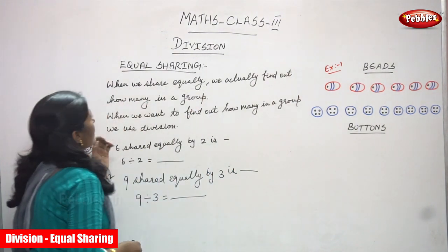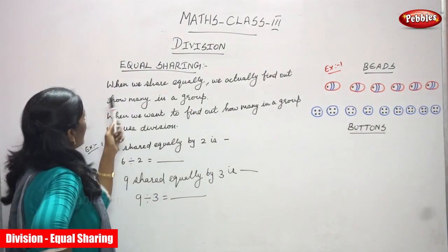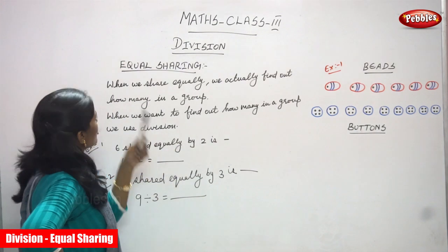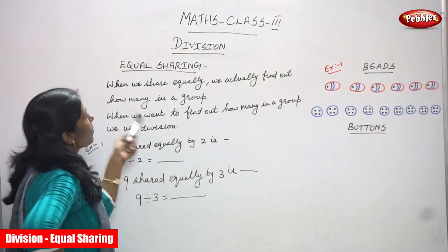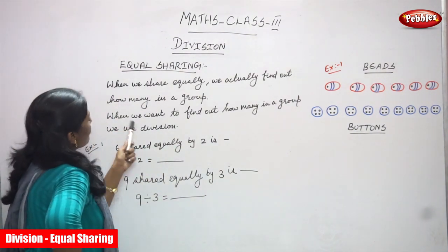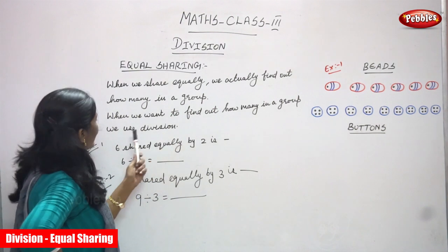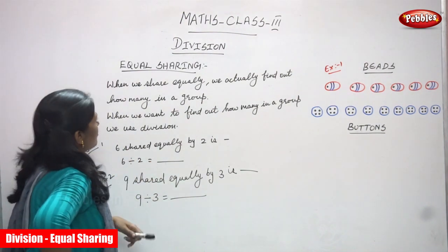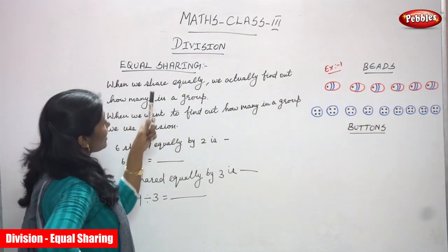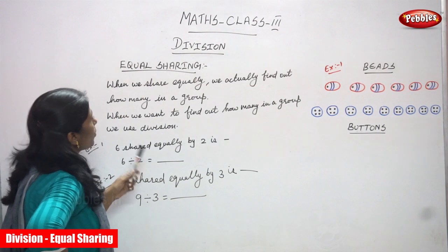Now we are going to see equal sharing. When we share equally, we actually find out how many in a group. When we want to find out how many in a group, we use division. That means when we share equally, we actually find out how many in a group.